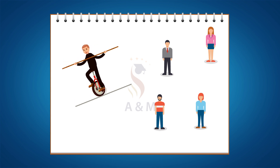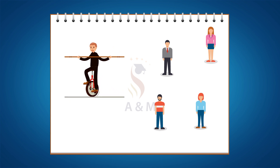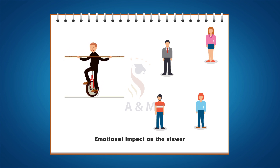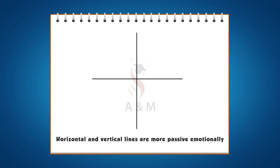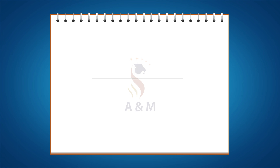A very small diagonal line can have much greater emotional impact on the viewer than larger horizontal or vertical lines. Horizontal and vertical lines are more passive emotionally and are also static from a spatial point of view. Horizontal lines convey a message of calmness while vertical lines send a message of strength.